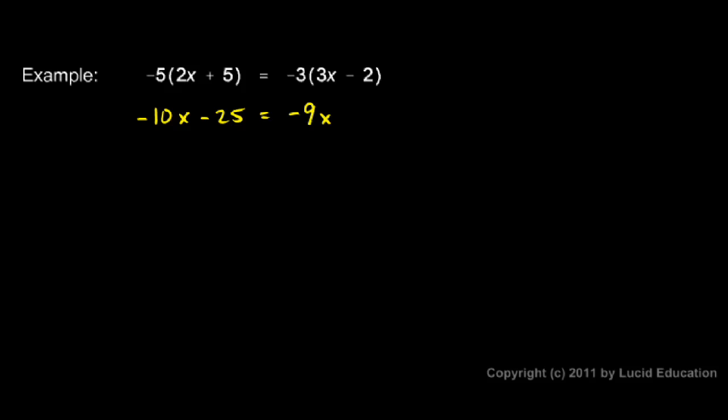Now I need to multiply the negative 3 times the negative 2. Don't forget that that 2 is negative. Negative 3 times negative 2 is positive 6. So my equation now reads negative 10x minus 25 equals negative 9x plus 6.